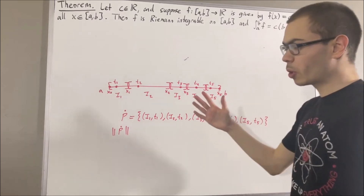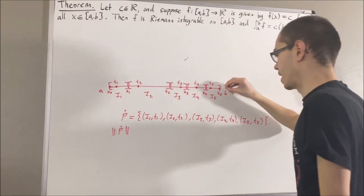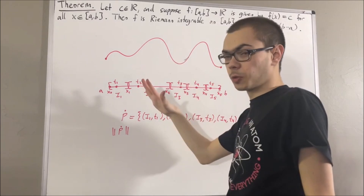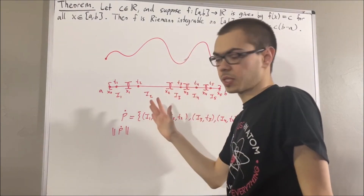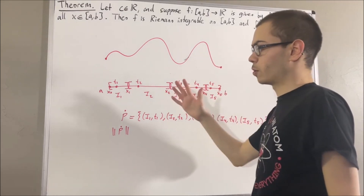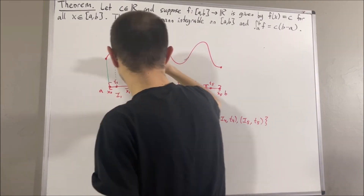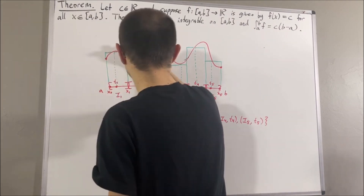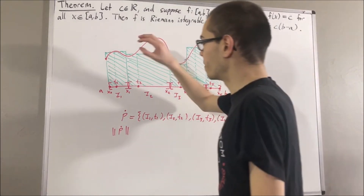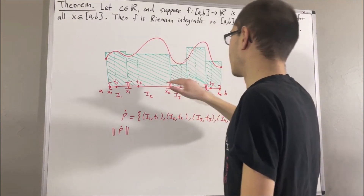Now let's talk about what a Riemann sum is. Consider some function defined on the closed interval [a, b]. What we're going to do is draw a bunch of rectangles, where the width of each rectangle is given by the length of each subinterval, and the height of each rectangle is given by the output value of the function at each of the tags. The sum of the areas of these rectangles is the Riemann sum corresponding to this tagged partition.